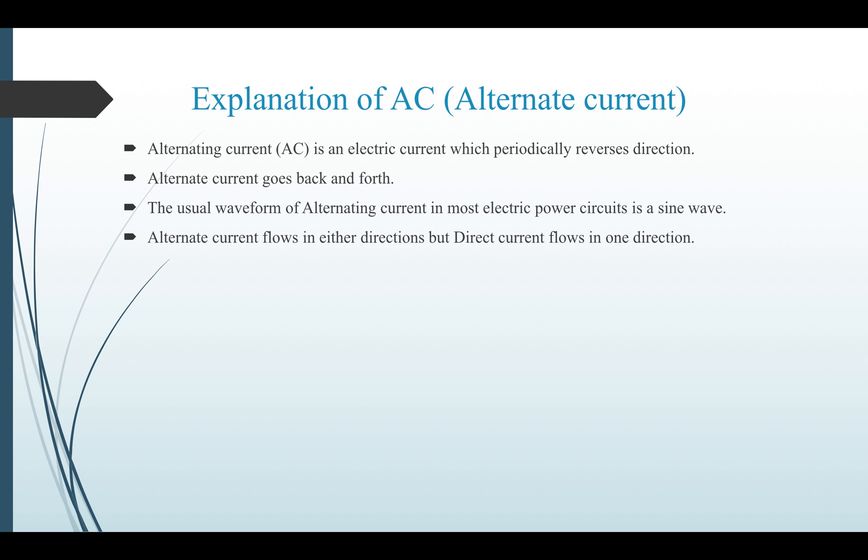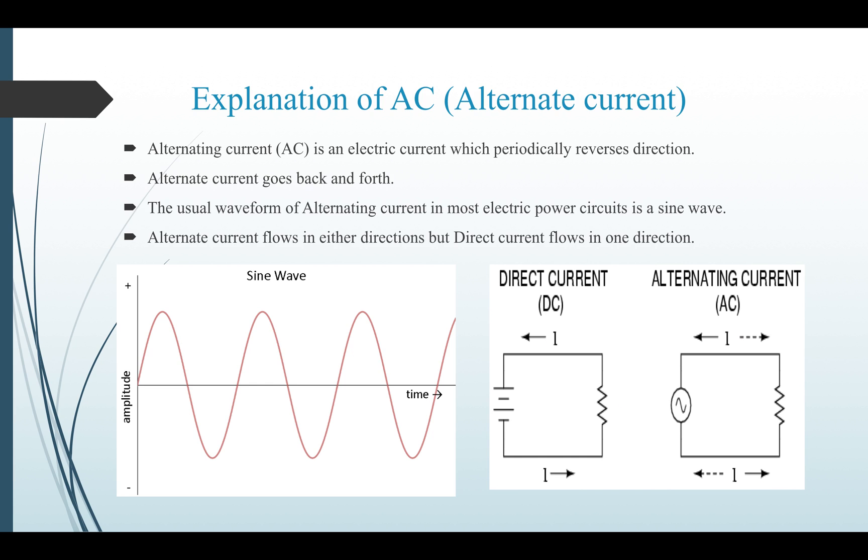Alternate current flows in either direction, but direct current flows in one direction. As I mentioned above, the sine wave usually starts from zero and takes one periodic cycle. Next to the sine wave, we can see what is direct current and what is alternating current. Direct current flows in one direction, and alternate current flows in either direction, that is back and forth.